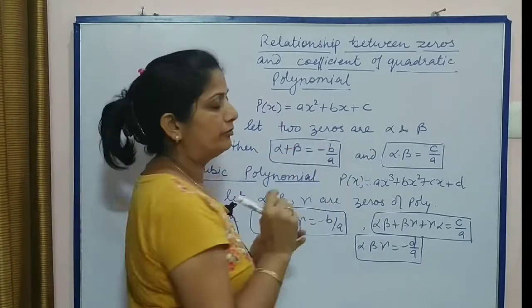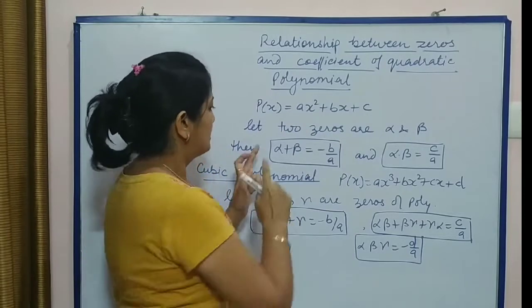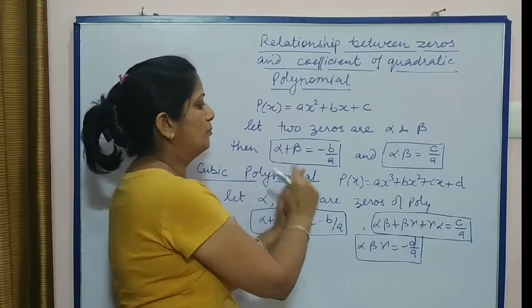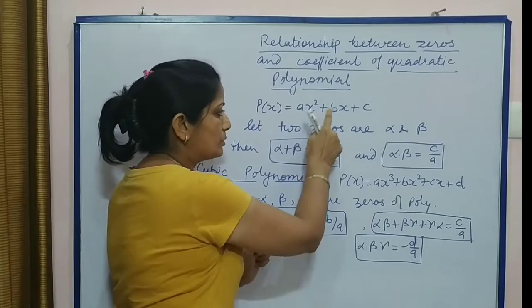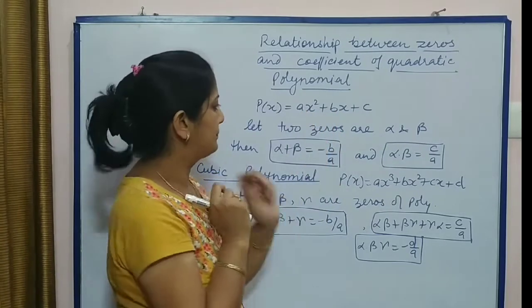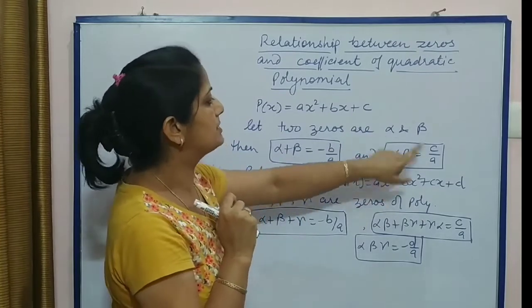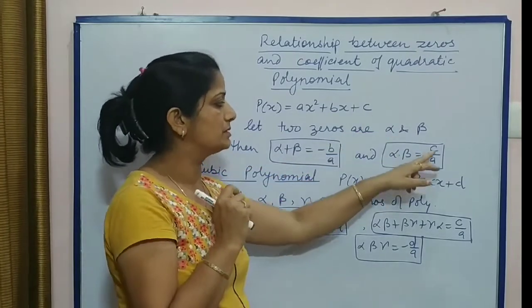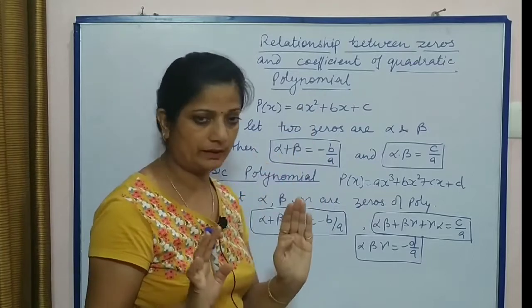Now let two zeros are α and β. Then sum of the roots is -b/a, that means coefficient of x upon coefficient of x². Then product of the roots is c/a. c is here constant term and a is coefficient of x².